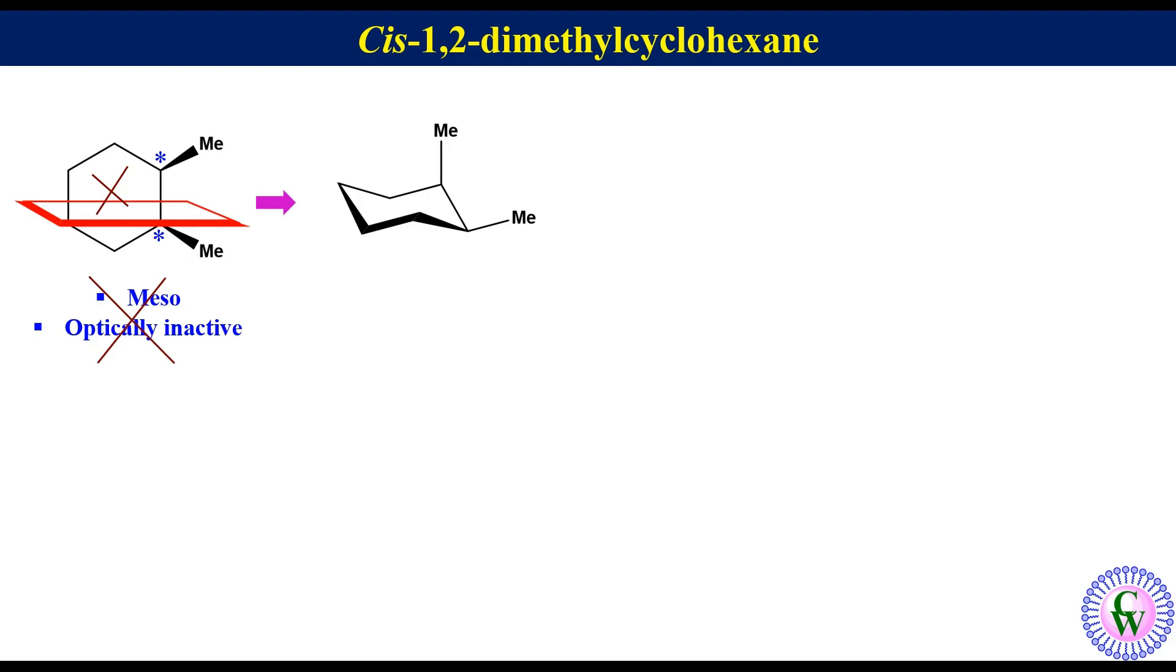It has one axial and one equatorial methyl group. Label it as conformation A. Here we can see that there is no plane of symmetry and the molecule is chiral.